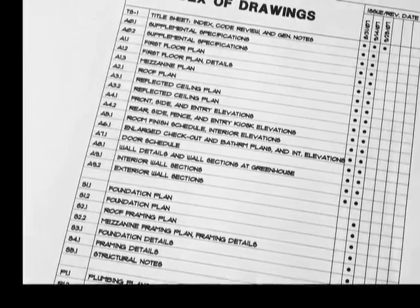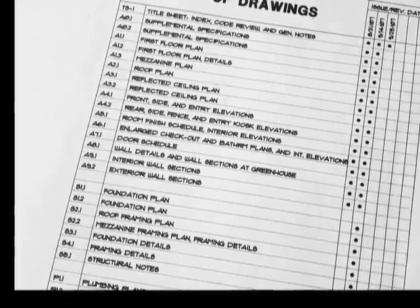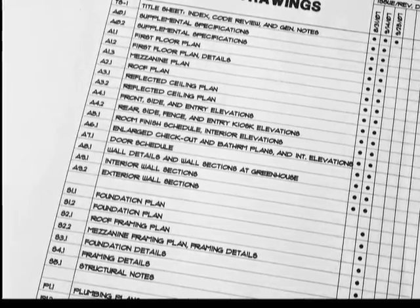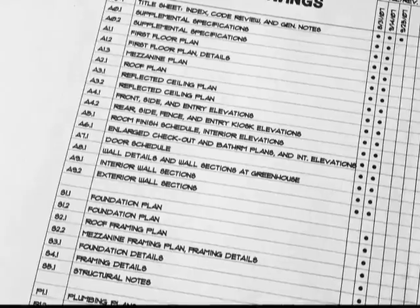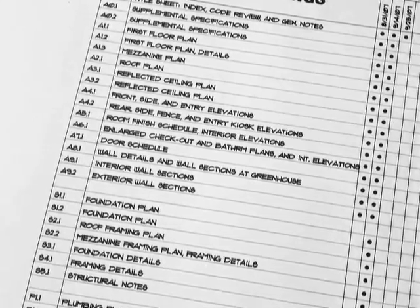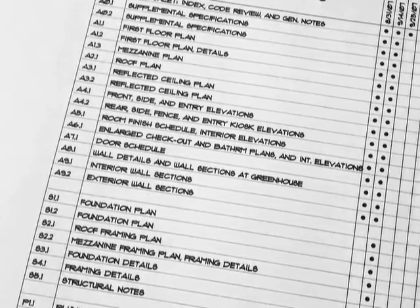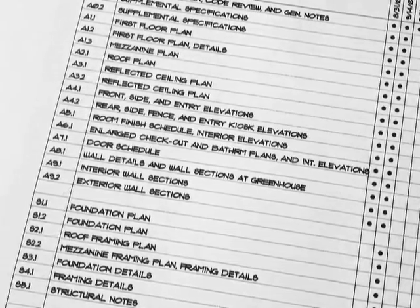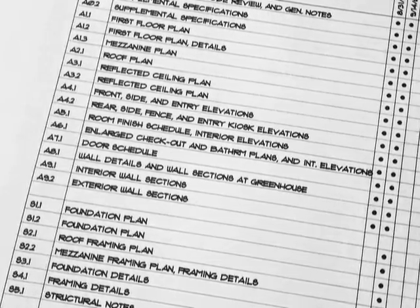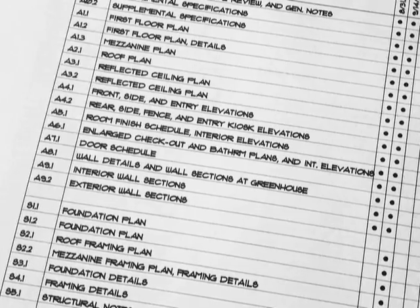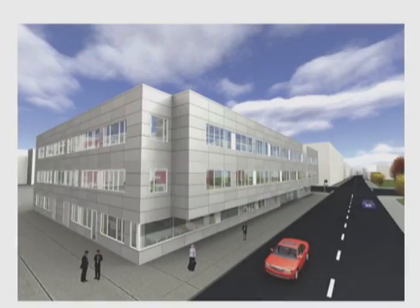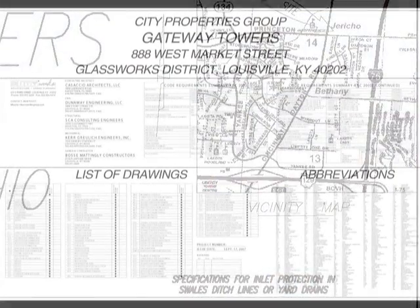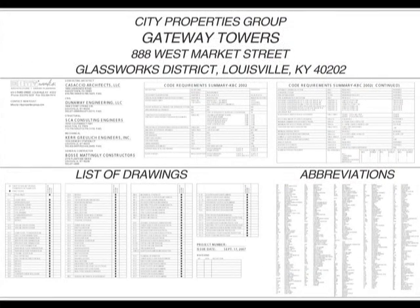The title page will outline the order of the drawings with page numbers and a brief description of what each page contains. Reviewing this information and becoming familiar with its contents is critical to the success of finding information for the building. Also found on the title page would be a building rendering and a site location map. The title page is a great resource page.